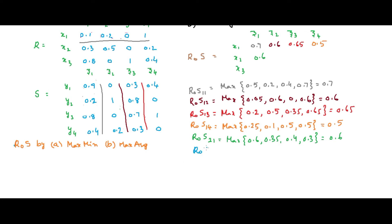Next is R∘S(2,2), the combination of x2 and z2. Maximum of averages: average of 0.3 and 0 is 0.15, average of 0.5 and 1 is 0.75, average of 0 and 0 is 0, and average of 0.2 and 0.2 is 0.2. The maximum is 0.75.